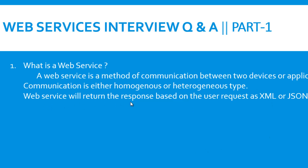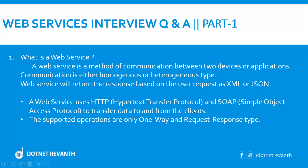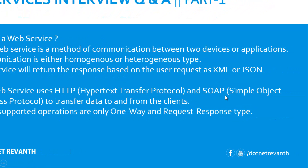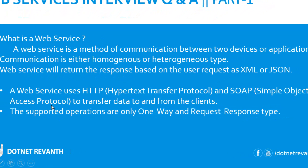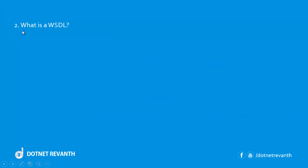Java web service will communicate with a .NET web service. A web service returns the response based on the user request as either XML or JSON. It uses HTTP and SOAP to transfer data to and from the client application. The supported operation of web services is one-way or request-response type.